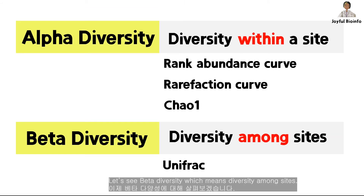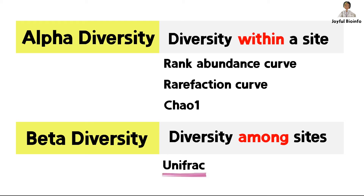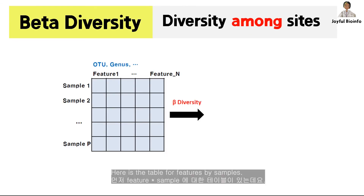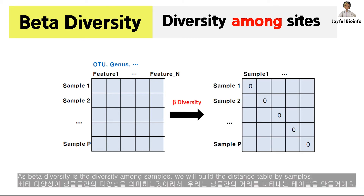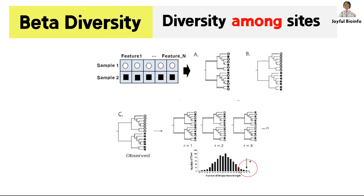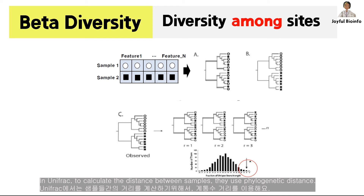Let's see beta diversity, which means diversity among sites. Here is the table for features by samples. As beta diversity is the diversity among samples, we will build the distance table by samples. In UniFrac, to calculate the distance between samples, they use phylogenetic distance.